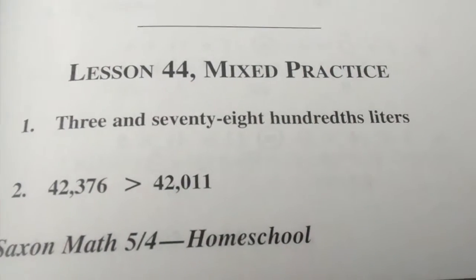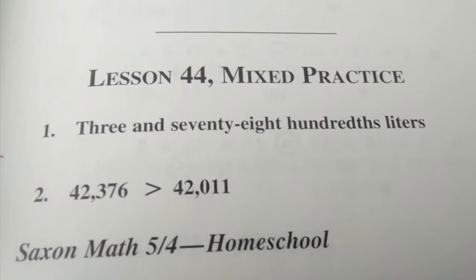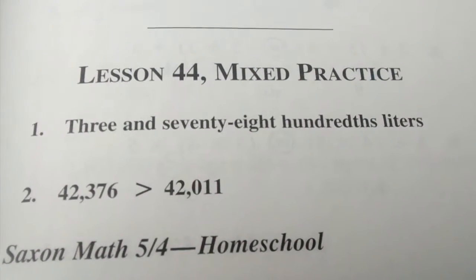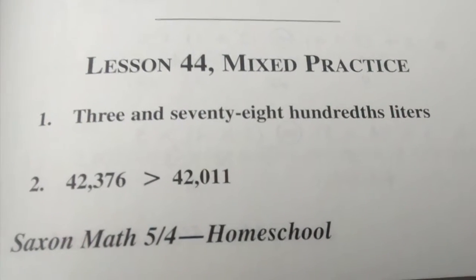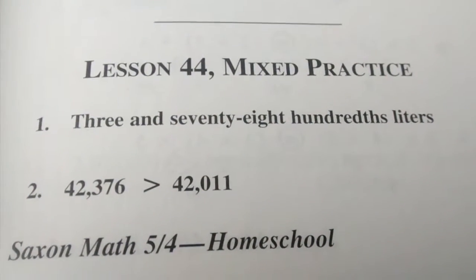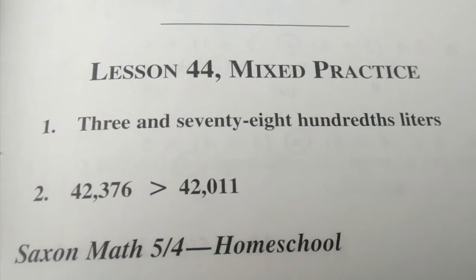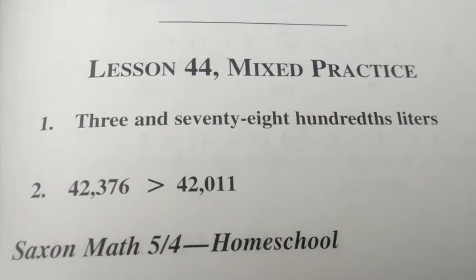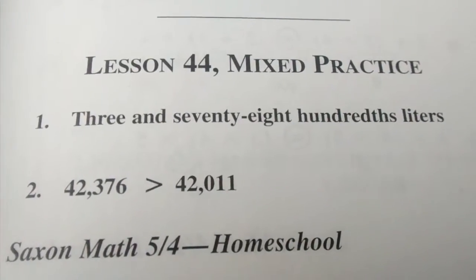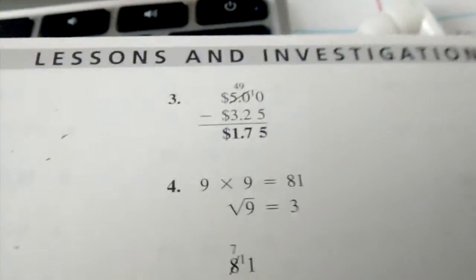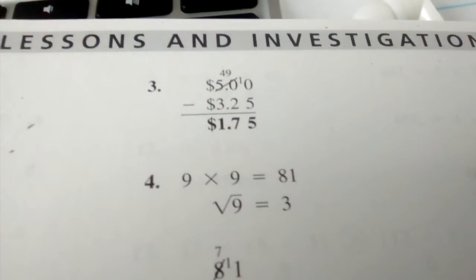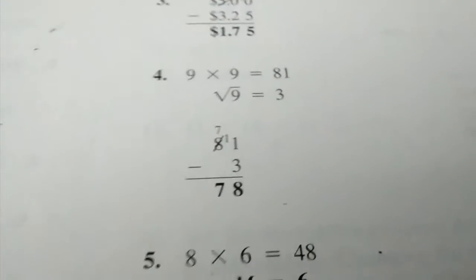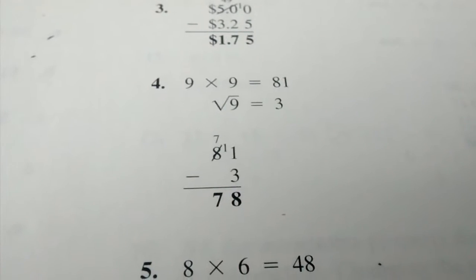Number one: three and seventy-eight hundredths liters. Number two: forty-two thousand three hundred seventy-six is greater than forty-two thousand eleven. Number three: one dollar and seventy-five cents. Number four: seventy-eight.